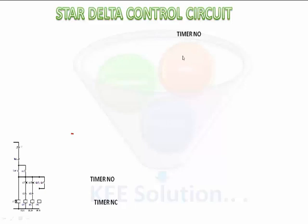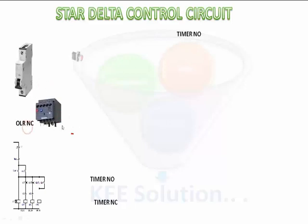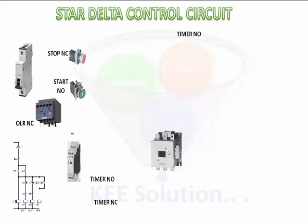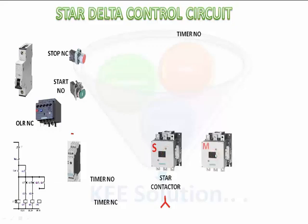Now we will take the star delta control circuit. In this circuit we will take all components and connect them in a way that is easy to remember. We will take an MCB, stop NC contact, start NO contact, overload relay, timer, star contactor, main contactor, and delta contactor.